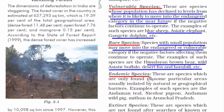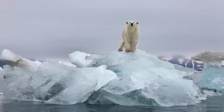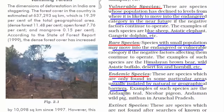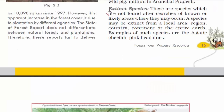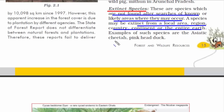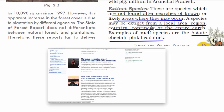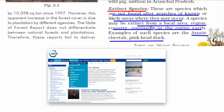The fifth classification is endemic species — those found in very particular areas out of human reach, usually isolated by natural or geographical barriers. The sixth and last classification is extinct species, which are gone and cannot be found anymore. A species may be extinct from a local area, region, country, continent, or from the entire earth. Examples include the Asiatic cheetah and pink-headed duck. These are the six classifications done by IUCN; a link to their website is in the description below.